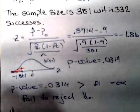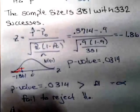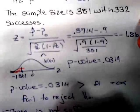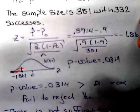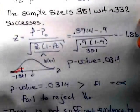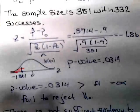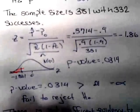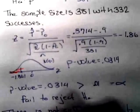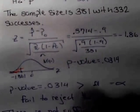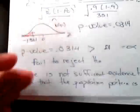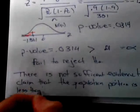So there is not sufficient evidence to claim that the population proportion is less than 0.9.